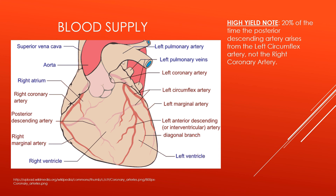Now I'm going to talk about the blood supply of the heart. The left coronary artery and the right coronary artery are the most important arteries in the heart. The left coronary artery gives rise to the left anterior descending artery, also known as the interventricular artery. This is the artery known as the widowmaker — it supplies a huge portion of the left ventricle and the interventricular septum. If you occlude this artery, there is a very high chance of mortality, which is why it's called the widowmaker.